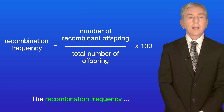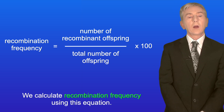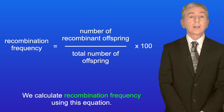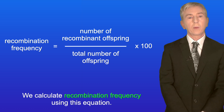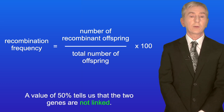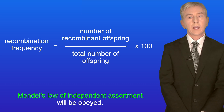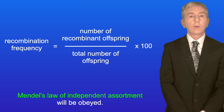The recombination frequency can be used to determine the amount of crossing over, and we calculate it using this equation: recombination frequency equals the number of recombinant offspring divided by the total number of offspring, multiplied by 100 to get a percentage. The maximum recombination frequency we can get is 50%. A value of 50% tells us that the two genes are not linked — that means they are on different pairs of homologous chromosomes and Mendel's Law of Independent Assortment will be obeyed.